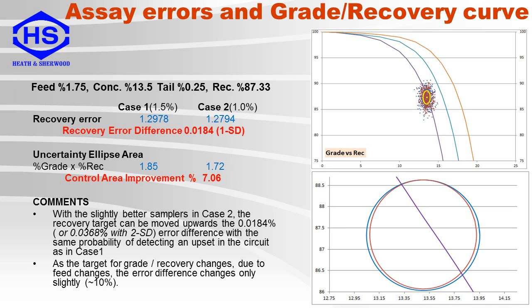One other point is that the calculated area of the grade recovery ellipse changes with the one standard deviation errors. In this example, the inner or red ellipse is smaller, resulting in a 7.1 percent improvement in the control point's uncertainty.